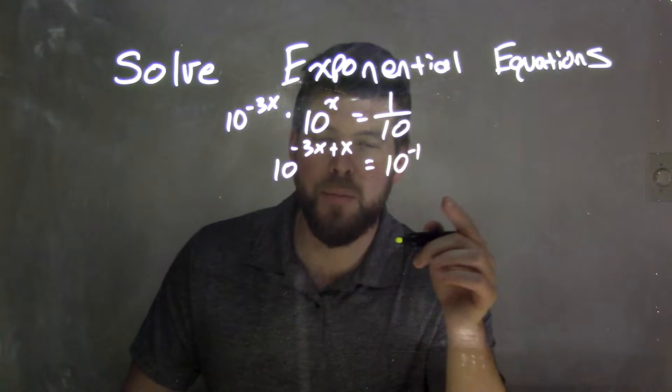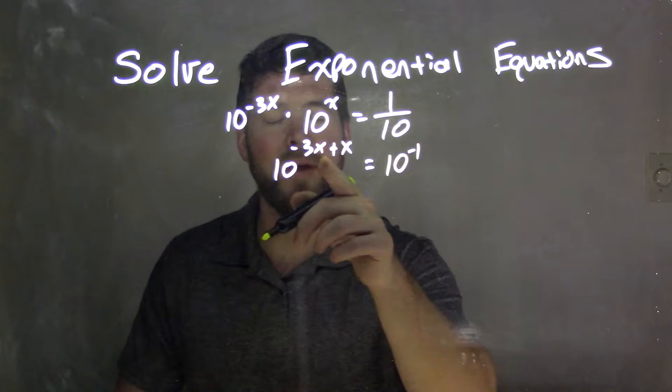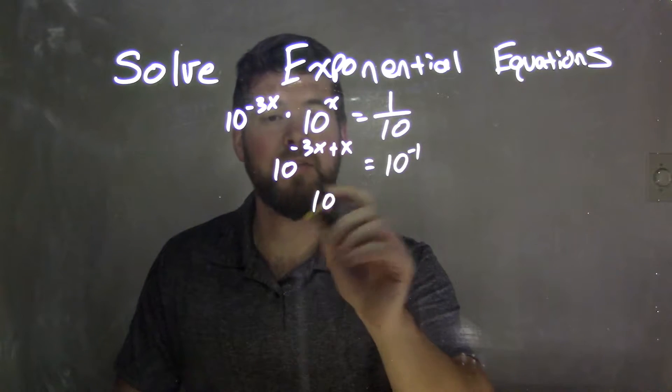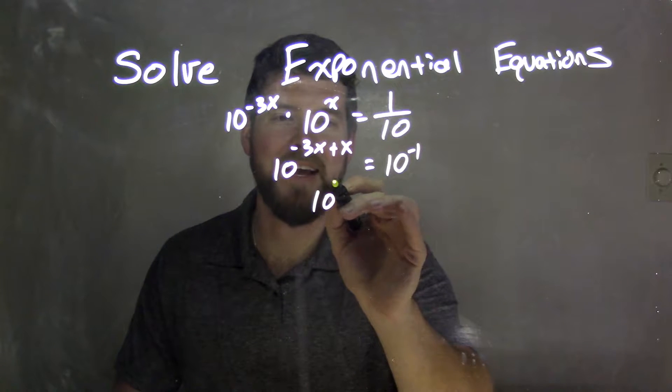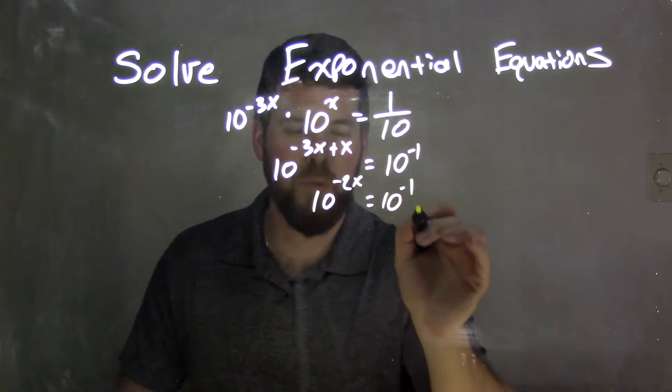And this is going to come into play in a minute. Well, if I simplify my -3x plus x, I can rewrite this to be 10^(-2x) equals 10^(-1).